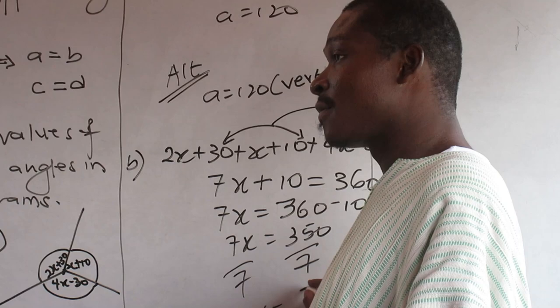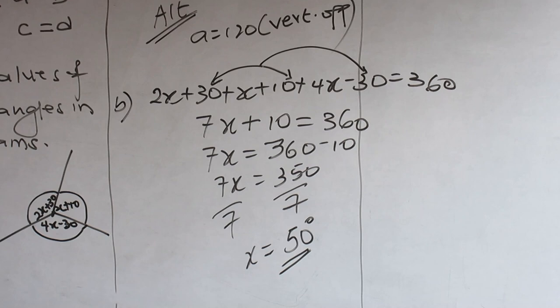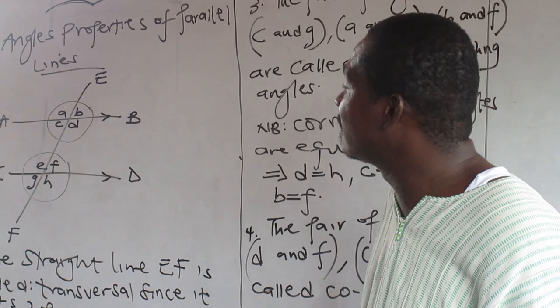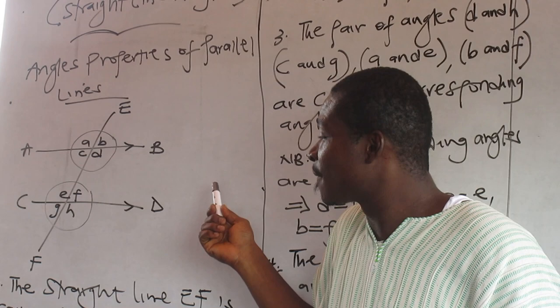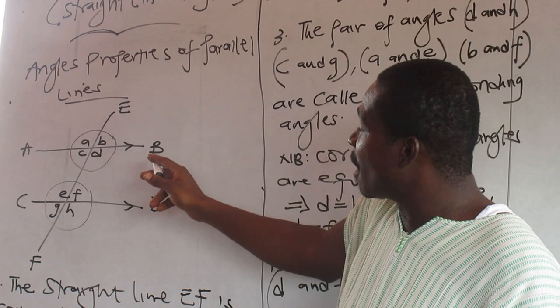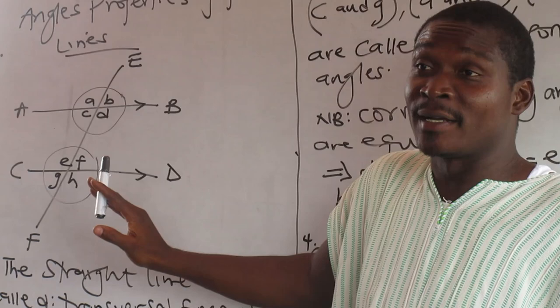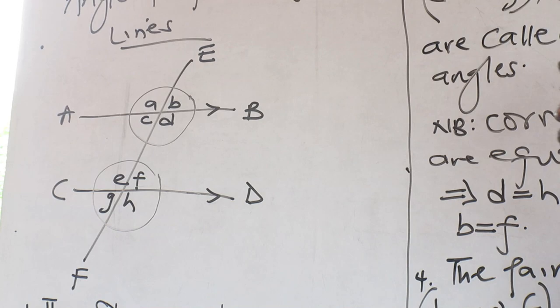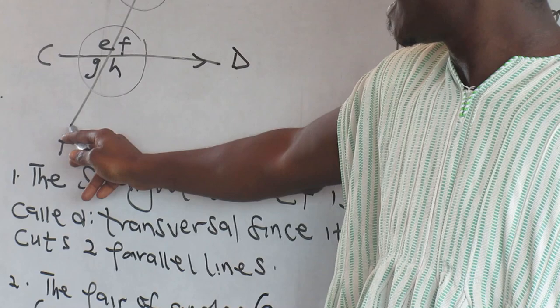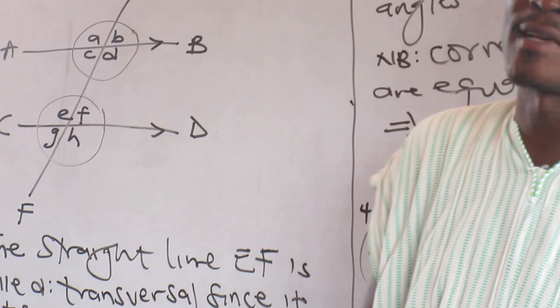Now, angle properties of parallel lines. These are parallel lines - that's the meaning of equal angles. All the problems start here. Once you can get all the angles here, you can get everything. It's the same thing we see every day - just the same lines, you put your circular or triangular ruler on it. The straight line EF is called a transversal because it cuts two parallel lines.